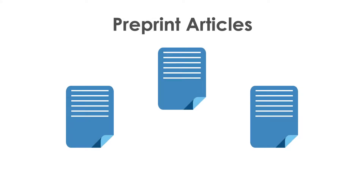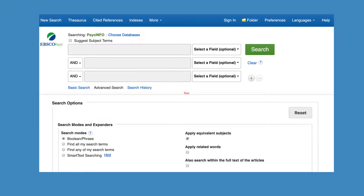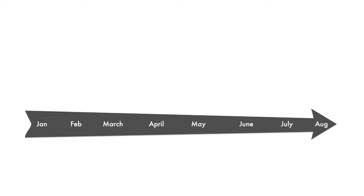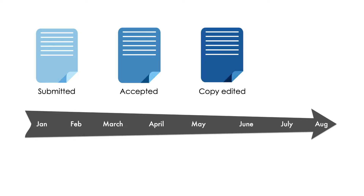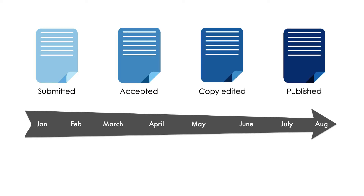Welcome. In this video, you'll learn how to find pre-print articles in PsycInfo when accessing this database through the EBSCOhost platform. From the time a manuscript is submitted to a journal for publication to the time the article is actually published and available in a print journal, many months can go by. For a researcher who wants access to the most current findings and data, this can be a frustrating situation.